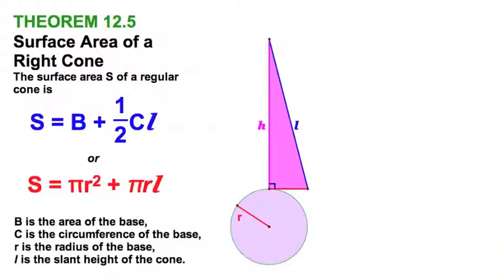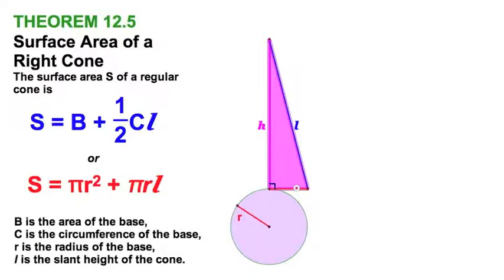Now we're going to explore the surface area of a right cone. I've made this view a little unusual. I've got a cross-sectional area right here. I want you to imagine this is the height of the cone, this is the slant height, this is the radius. So this triangle would be on the inside. If this triangle were revolved around H, it would generate a cone.